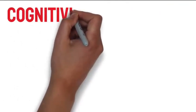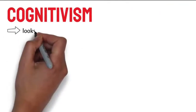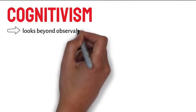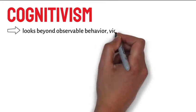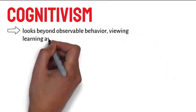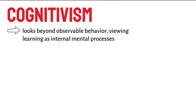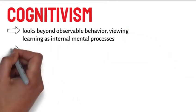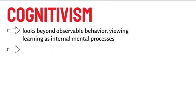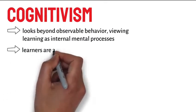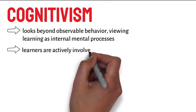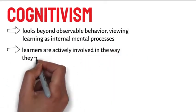Cognitivism therefore looks beyond observable behavior, viewing learning as internal mental processes. In this view, learners are actively involved in the way they process information.